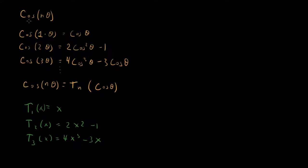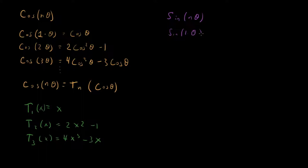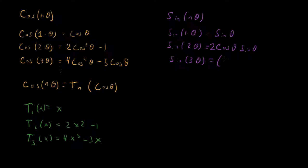We started by looking at cos(nθ), but you might ask: what about sin(nθ) — can we do the same type of thing? Let's look at sine of n theta. Sine of one times theta is just sine theta. Sine of two theta equals 2 cosine theta sine theta. Sine of three theta can be expressed as four times cosine squared theta minus one, times sine theta.